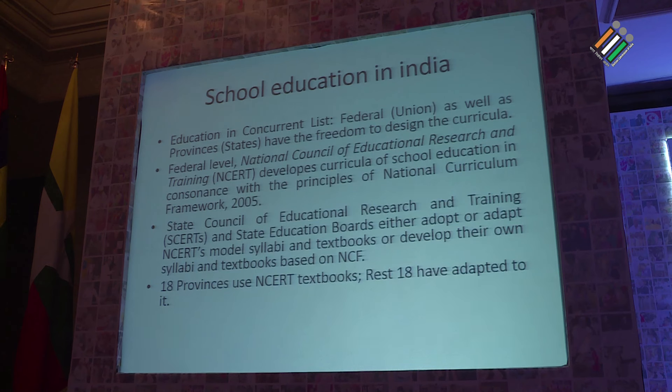At the federal level, we have the National Council of Educational Research and Training, which develops curricula for school education. Presently it has developed the National Curriculum Framework 2005. State Councils of Educational Research and Training and State Education Boards either adopt or adapt this model syllabi and textbook, or develop their own based on this framework. At present, 18 provinces use NCERT textbooks designed at the federal level, and the rest 18 have adapted to this particular textbook.